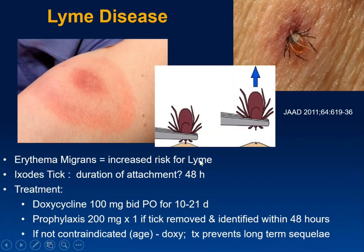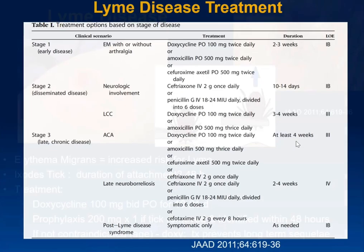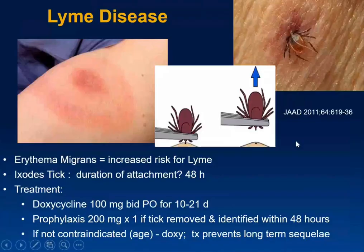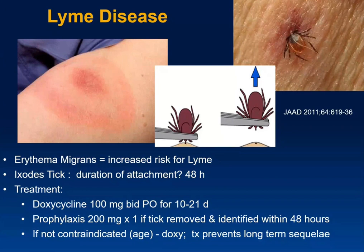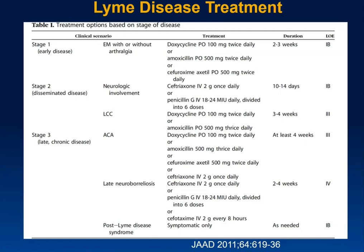The treatment of choice is doxycycline. For prophylaxis when a tick has been attached 48+ hours, use a single 200 mg dose after tick removal — ideally after identifying it as a black-legged tick. If not contraindicated by age, use doxycycline. There's actually great data supporting doxycycline use even in young children — just not during pregnancy, due to concerns about enamel discoloration and bone growth.